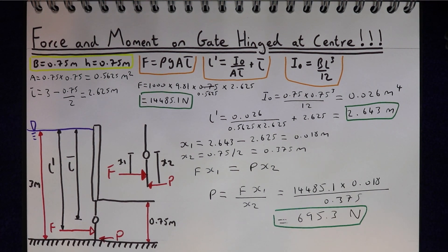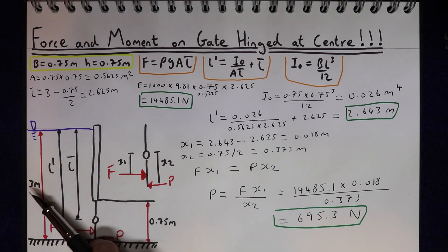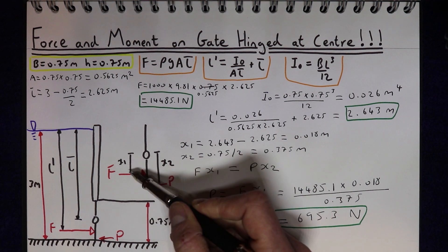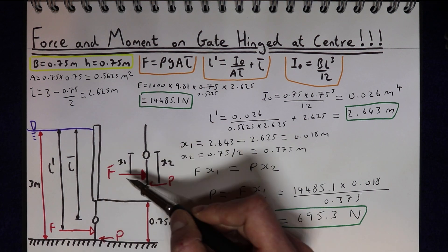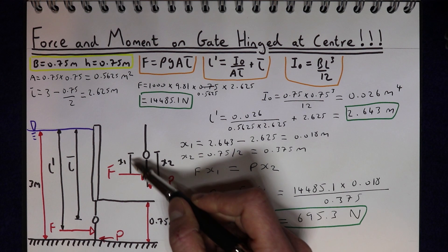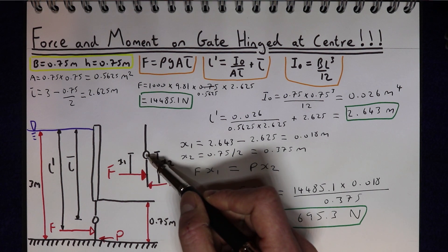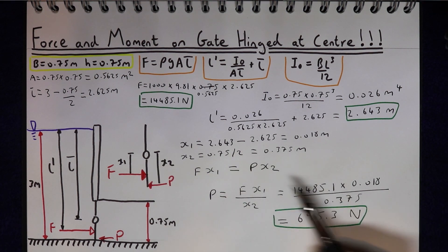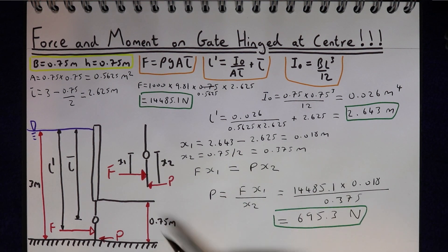The most important thing for these types of problems is that, for the information you're given, you need to work out the key distances: what L-bar is and what the distance from the force to the centre of the gate is. Once you've done that, you can rearrange the problem to get the force keeping the gate shut.